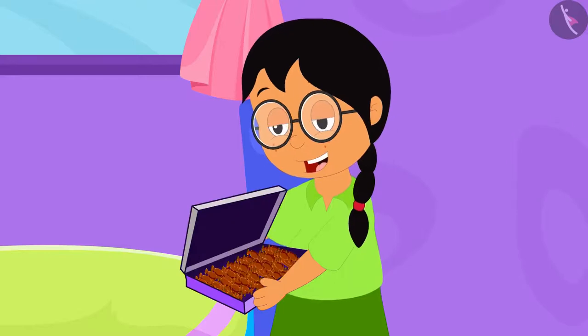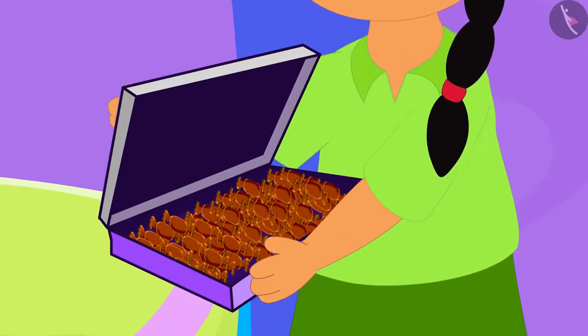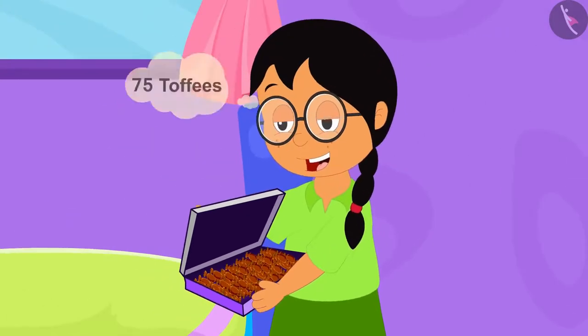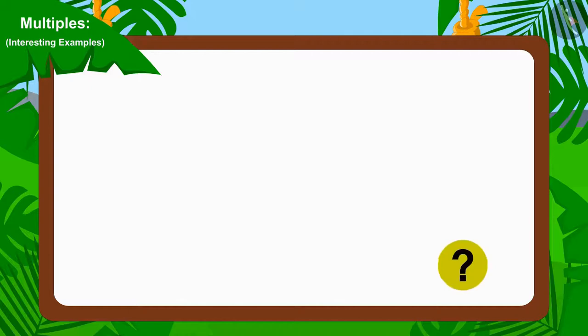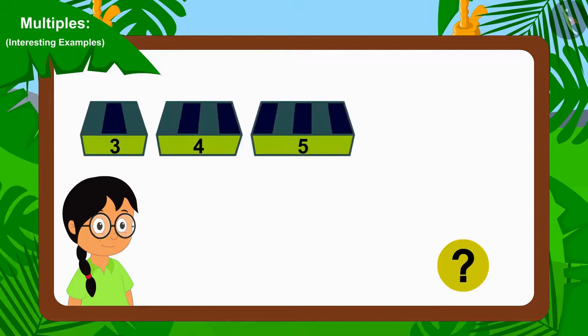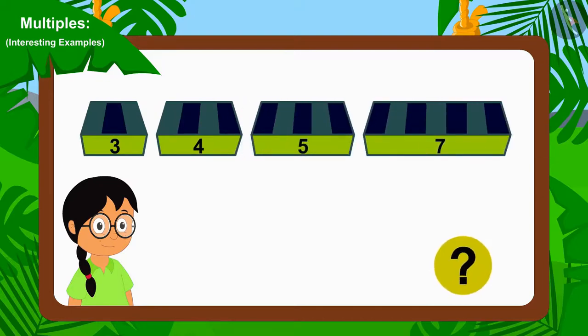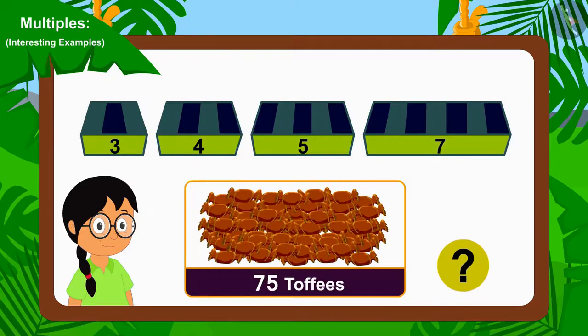Now, Meenu opened a chocolate toffee packet brought by her uncle. She found 75 toffees in this packet. Now, can you tell which of the groups of 3, 4, 5, or 7 can Meenu use to distribute these 75 chocolate toffees equally? If you want, you can stop the video and find the answer.